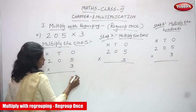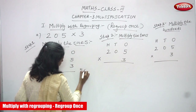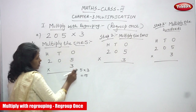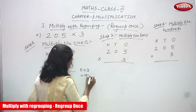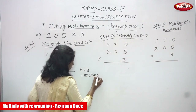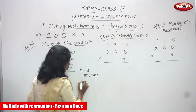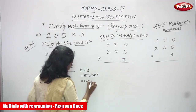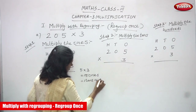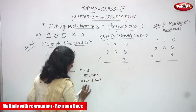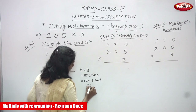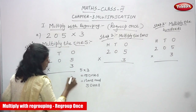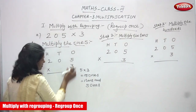Step one: multiply the ones. Five ones multiplied by three — 5 into 3 — you get 15 ones. So 15 ones means one ten and five ones. You must write the five ones in the ones place.